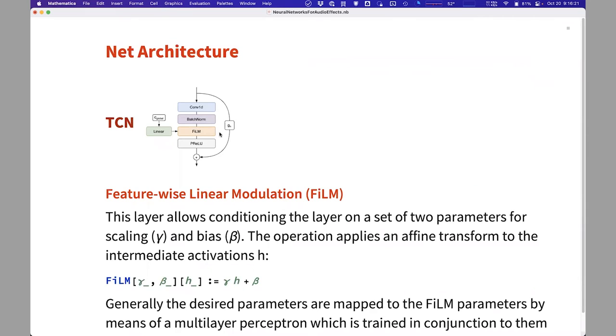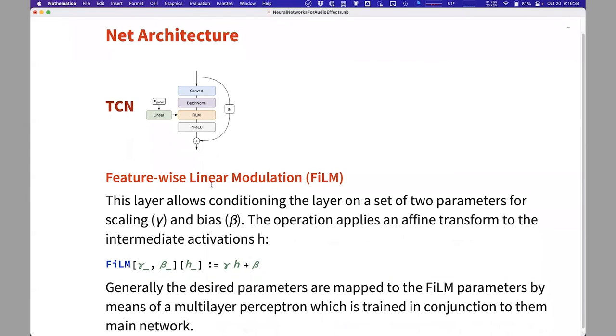The second interesting bit of this TCN block is the feature-wise linear modulation layer. So I remember how I said we want to be able to tweak knobs for the network. Well, this is what does that.